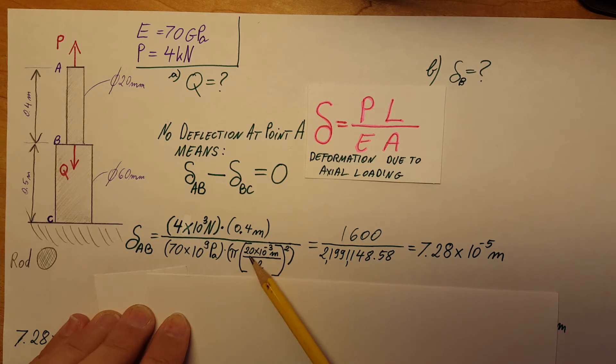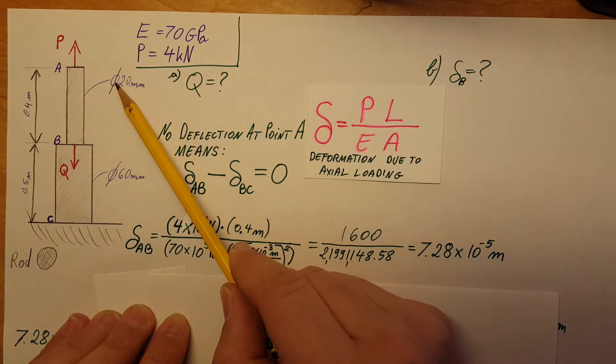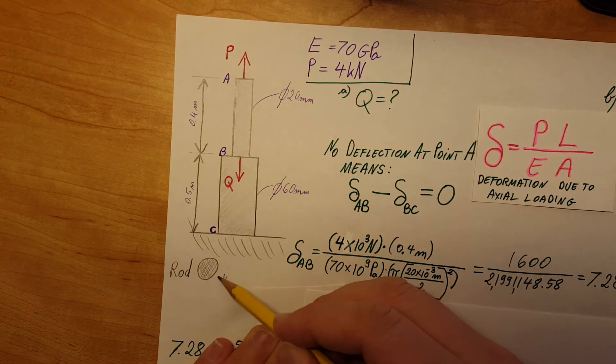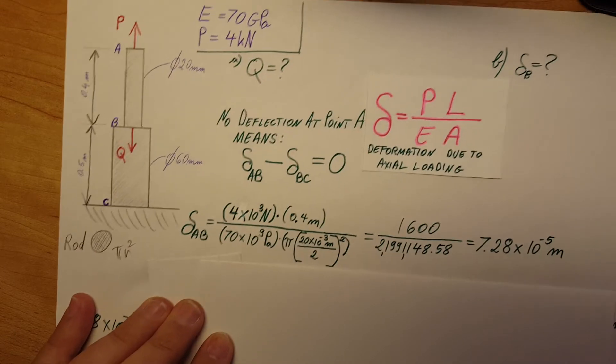Our area is circular, so pi times the diameter, which is given as 20 millimeters. Convert it to meters, divided by 2 because we need the radius. Area of a circle is pi r squared.